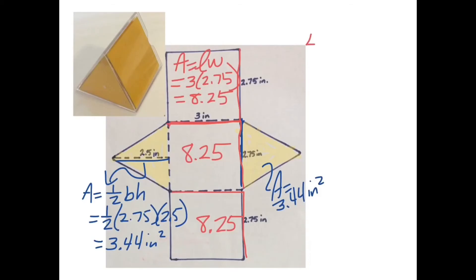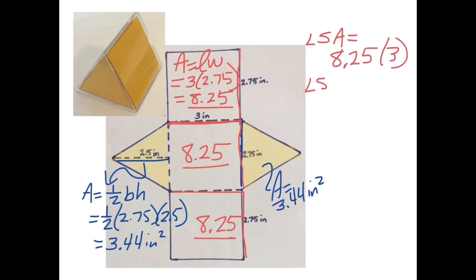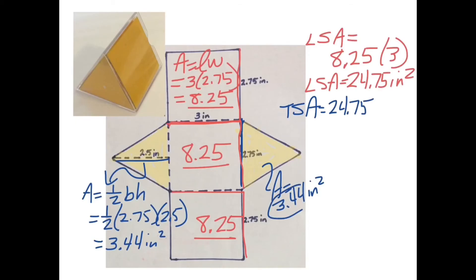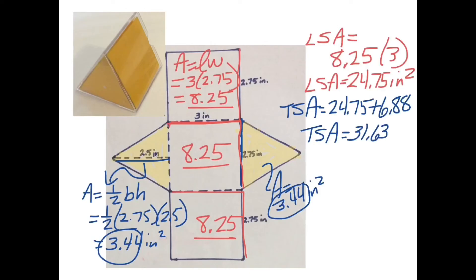To find our lateral surface area — everything except the bases — we have three rectangles each at 8.25, so three sets of 8.25 gives us a lateral surface area of 24.75 square inches. For our total surface area, we add in our two triangular bases, which together equal 6.88 square inches. So our total surface area is 24.75 plus 6.88, which equals 31.63 square inches.